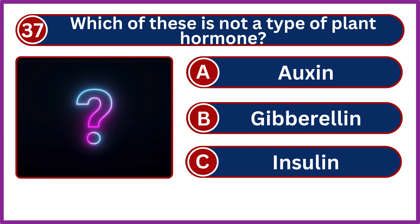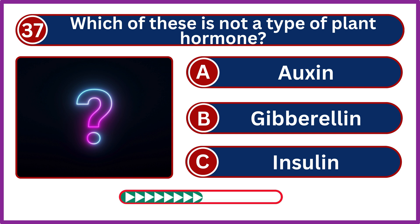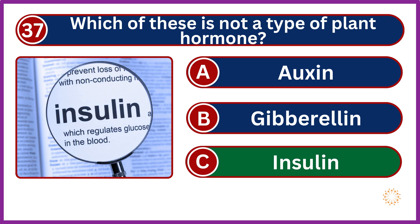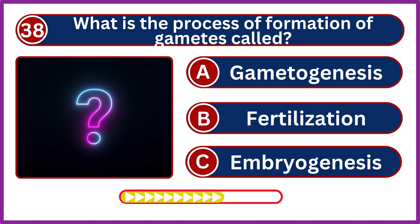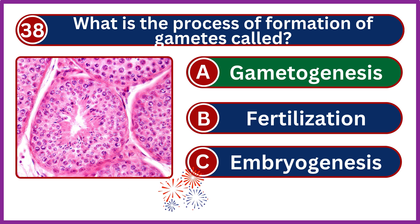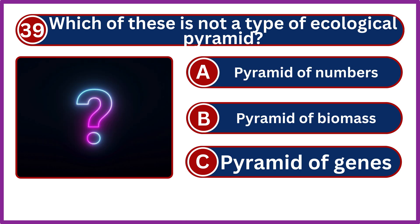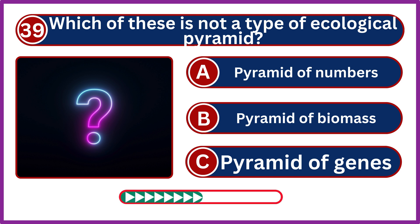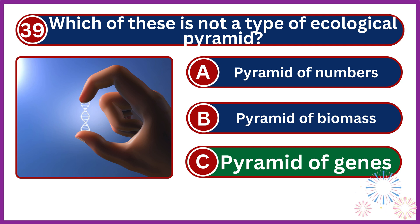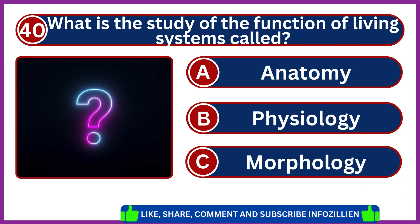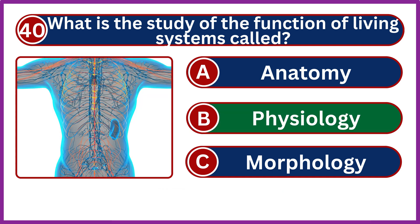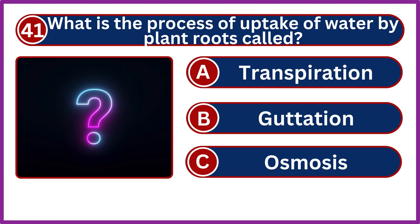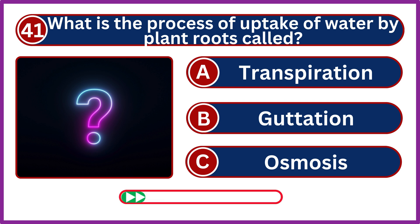Which of these is not a type of plant hormone? Insulin. What is the process of formation of gametes called? Gametogenesis. Which of these is not a type of ecological pyramid? Pyramid of genes. What is the study of the function of living systems called? Physiology. What is the process of uptake of water by plant roots called? Osmosis.